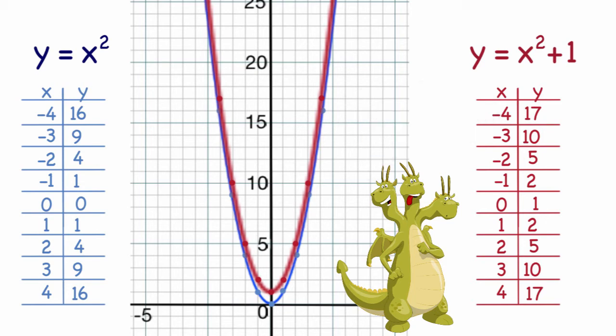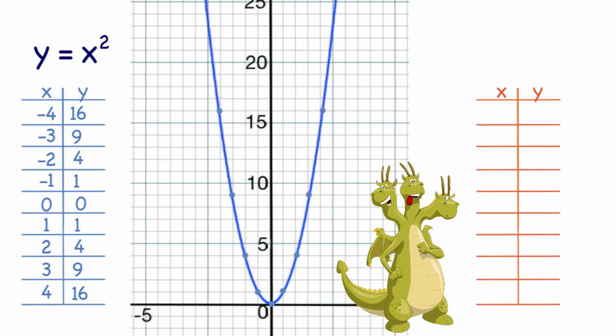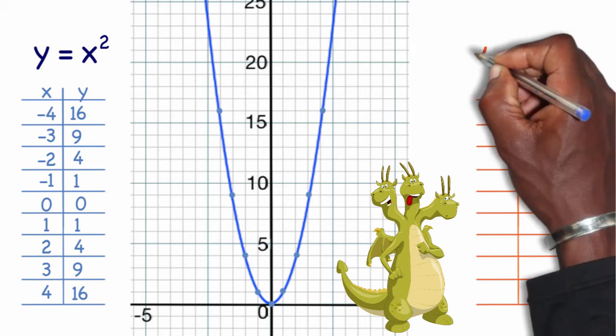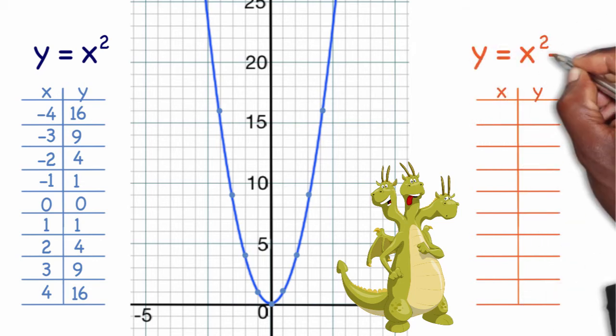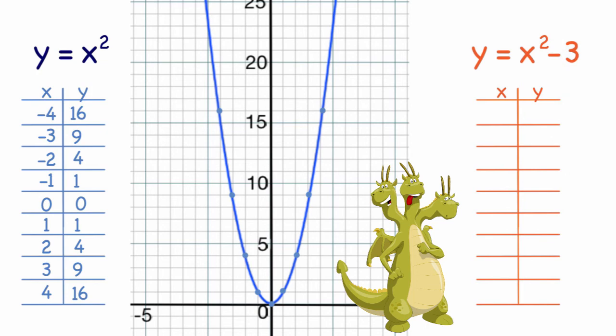If I wanted to test this out to see if I could shift my entire graph down, say, three spots, my hypothesis might be that all I have to do is take my parent graph formula, which is y equals x squared, and just subtract 3. All my y coordinates in the original parent graph would simply be moved down three spots.